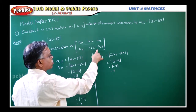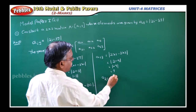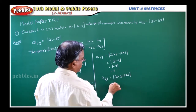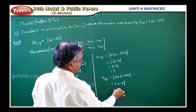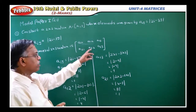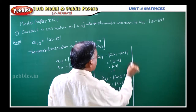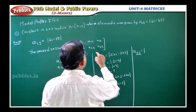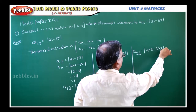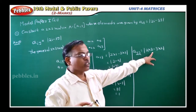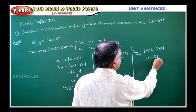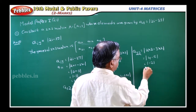The first row is fully finished. Next, A₂₁: i value is 2, j value is 1. So 2 into 2 minus 3 into 1, nothing but 4 minus 3. This is a positive value already — modulus of 1 is 1. So A₂₁ equals 1. Next element, A₂₂: i value is 2, j value is 2. So 2 into 2 minus 3 into 2, which is 4 minus 6, nothing but modulus of minus 2, nothing but 2. So A₂₂ equals 2.